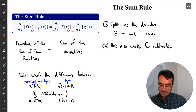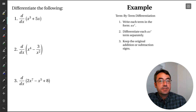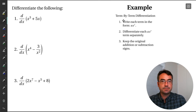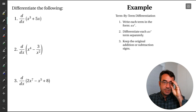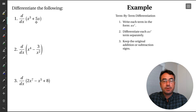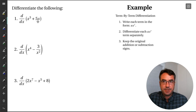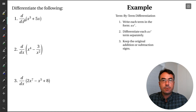Let's try a few more examples. We've now set the stage with sums, differences, constant multiplication, and this strategy of term-by-term differentiation. The idea is when we look at our function and want to differentiate it, the addition signs and subtraction signs give us a natural breakpoint for looking at the different pieces. We identify each term and differentiate it separately.